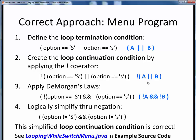Next, we can transform the expression by applying DeMorgan's laws. Looking here on the right, we go from this form to this form by turning the interior or operator into an and operator and then distributing the not operator over both terms. Applying that to our example, we turn this interior or into this and, and then negate each of these individual terms.